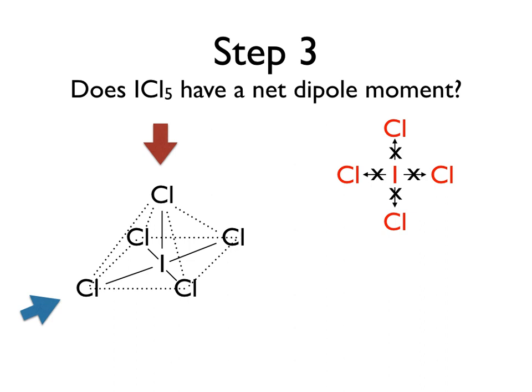Let's consider it from a different angle. Now we're going to be seeing the iodine in the center with the chlorines on the left, right, and top. Again, we draw on our individual dipole moments, and we'll note that the chlorines on the left and the right, just as before, are going to cancel each other. Unlike above, this time the chlorine at the top does not have a dipole pointing down to cancel it out, so from this vantage point there is a dipole moment. Therefore, our molecule as a whole has a net dipole moment pointing straight up, making iodine pentachloride a polar molecule.